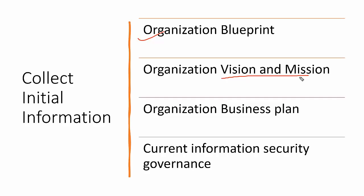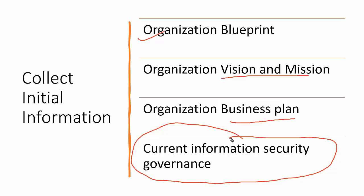We need to know the organization's vision and mission, because that determines how we adopt the framework and create the cybersecurity strategy. We also need to understand the business plan — expected revenue, expectations from a cybersecurity standpoint, and how cybersecurity creates value. For this, you need to schedule meetings with the CEO, board directors, or senior management. We also need to understand whether they have a current information security governance structure: existing policies, a cybersecurity strategy, and defined roles and responsibilities.